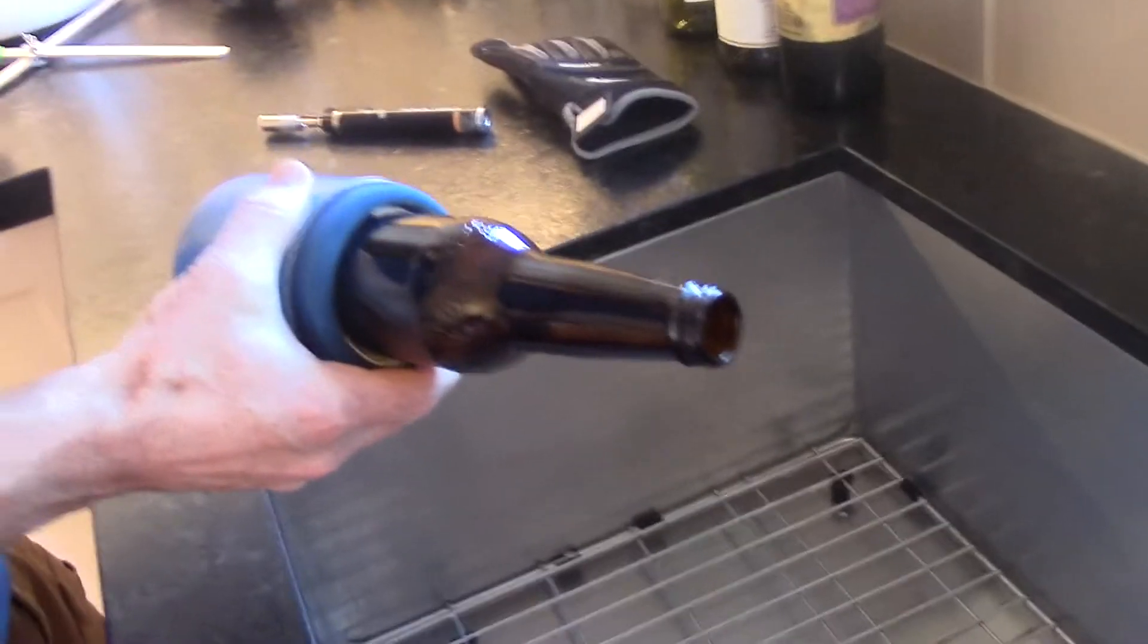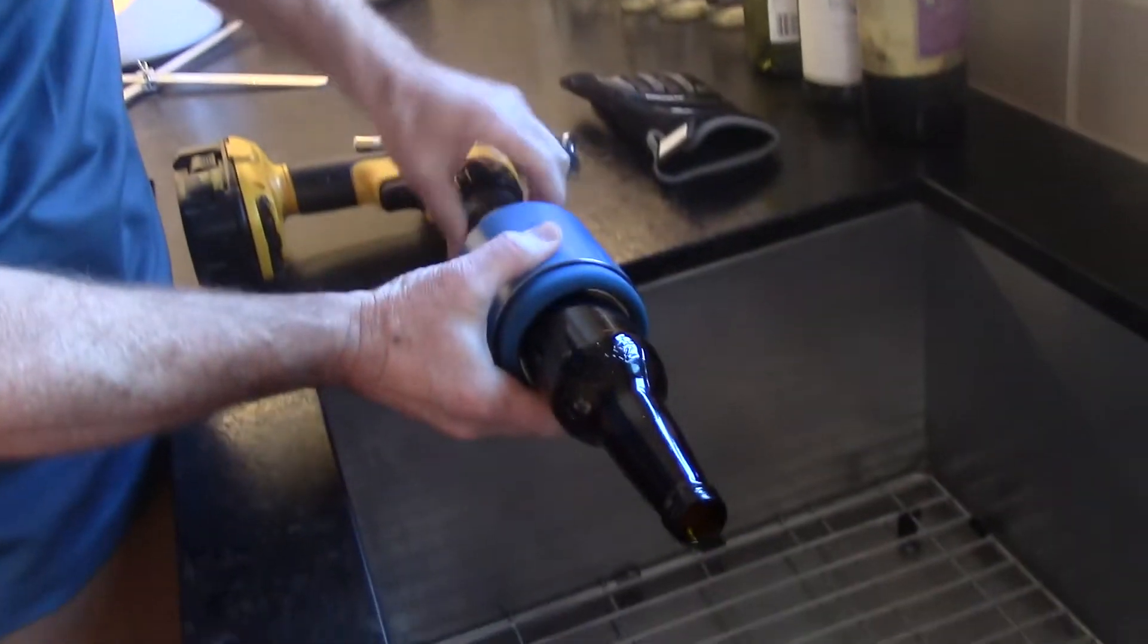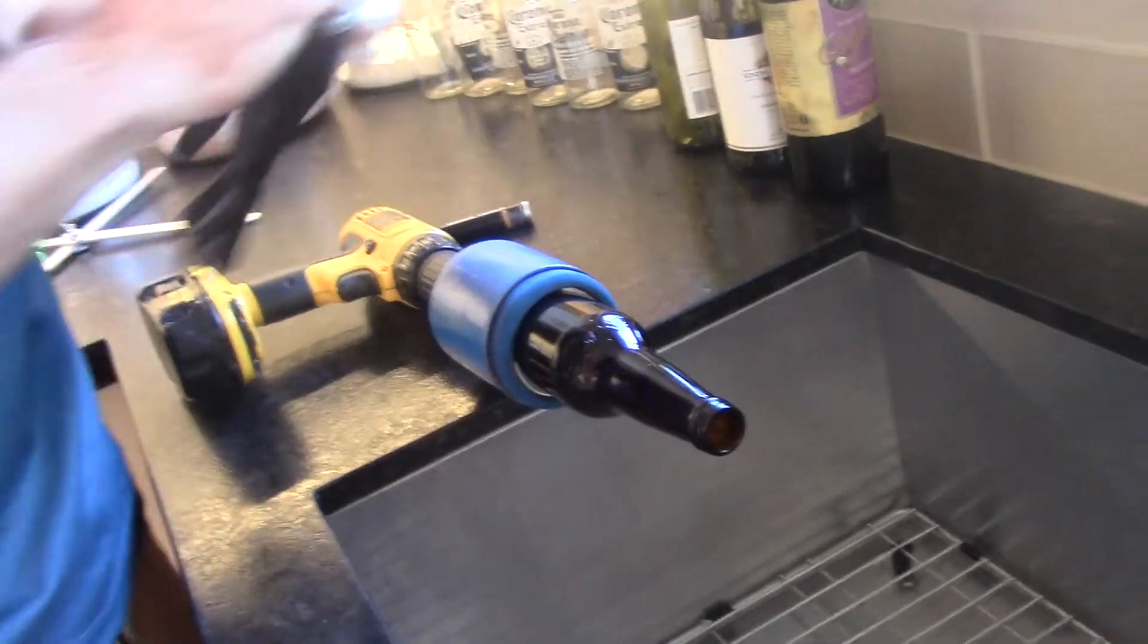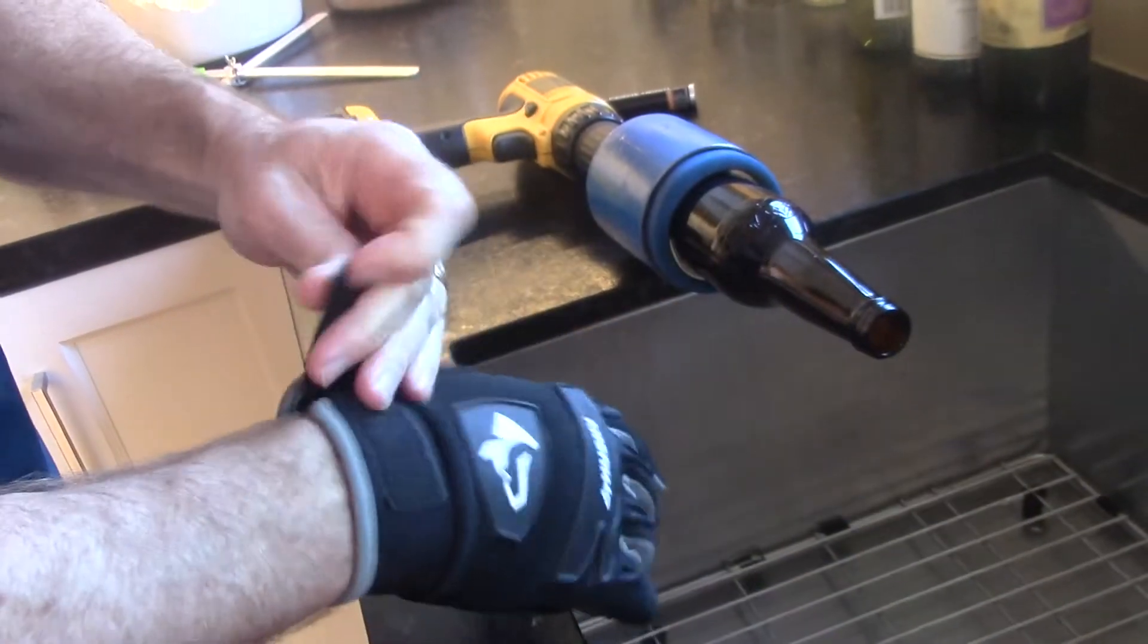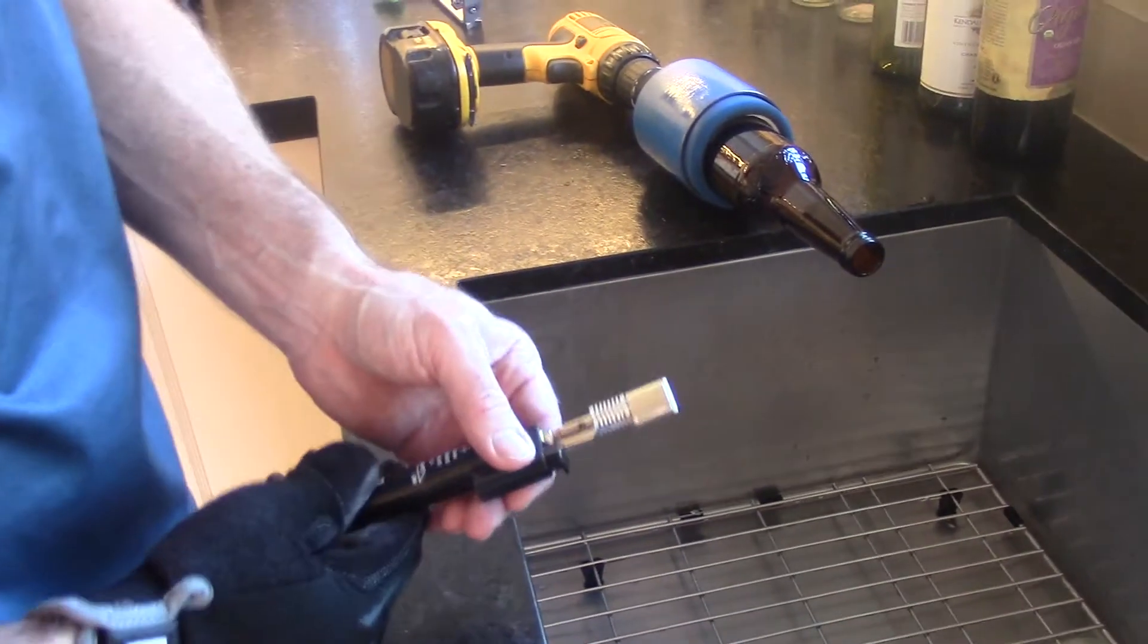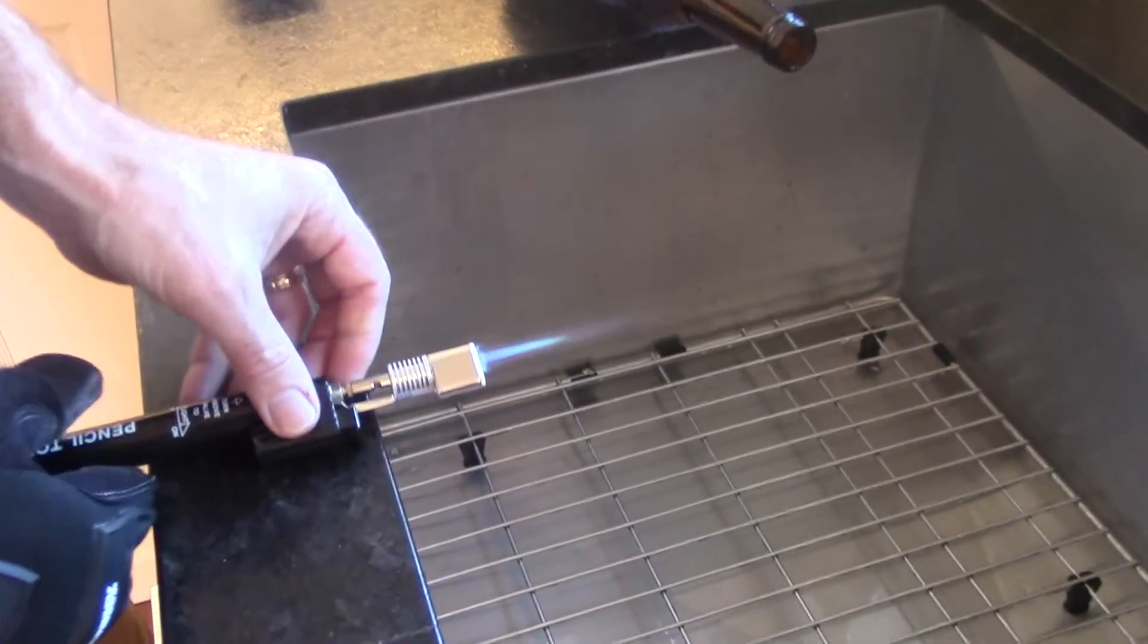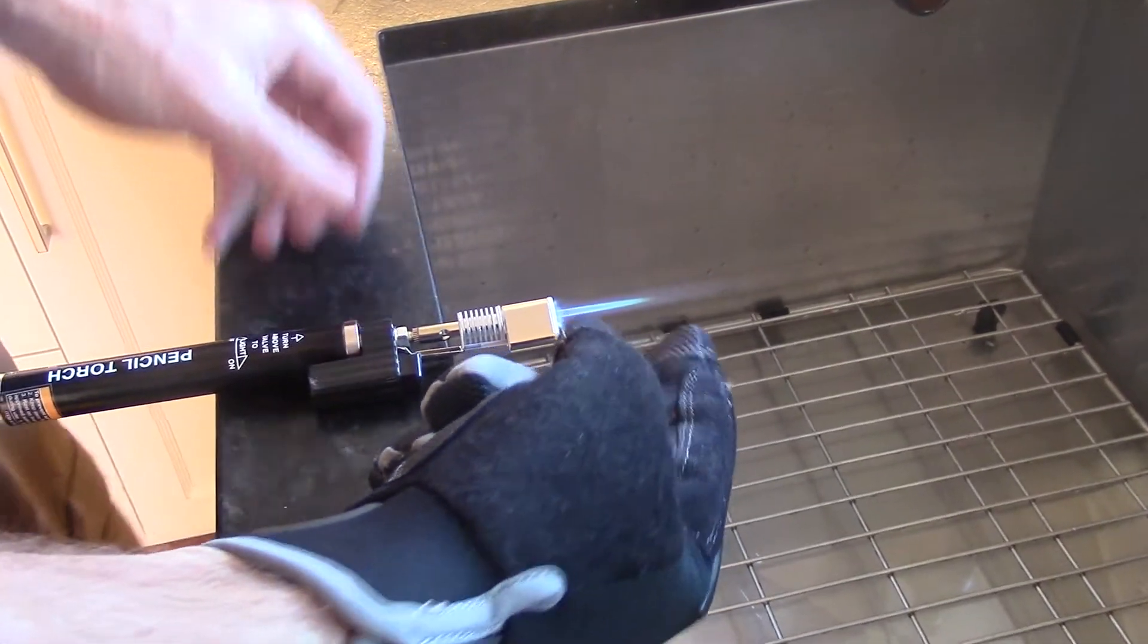Always wear protection when you're doing something like this. So you're going to look at the flame on your torch, and that little blue flame right there, that's what you want to touch the score line, just barely.